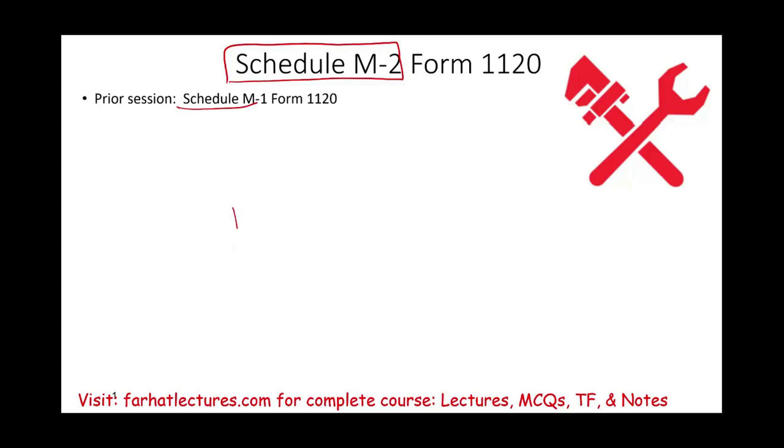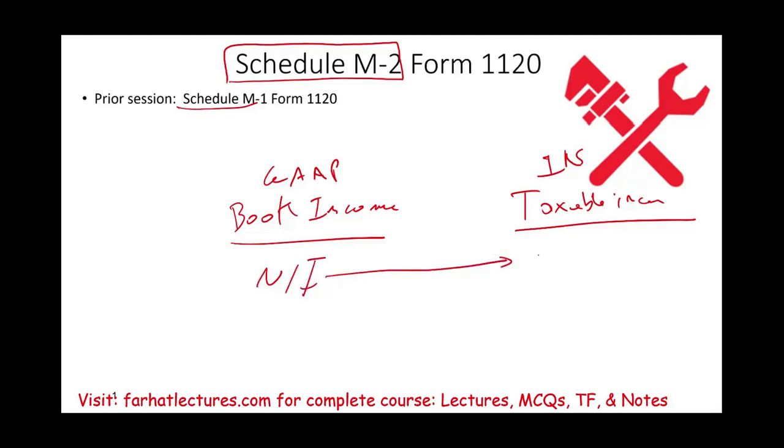Just real quick to review what Schedule M-1 is all about. M-1 is taking your book income, which is your GAAP income, and reconciling your GAAP income to your taxable income, which is IRS. So what we're doing is we're taking your net income for book purposes, and we're reconciling it to tax or IRS purposes. What the IRS wants to see from Schedule M-1 are the differences. Why is your net income for GAAP different than your net income for tax? What are those main differences?